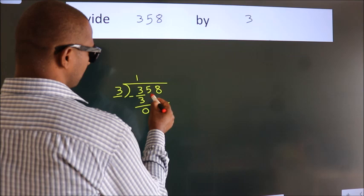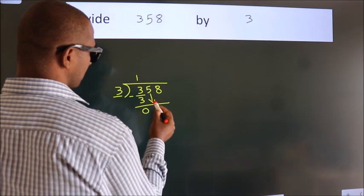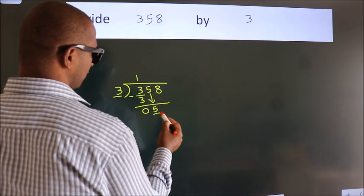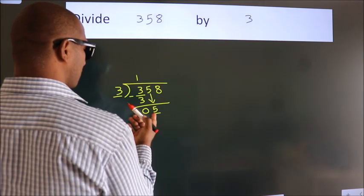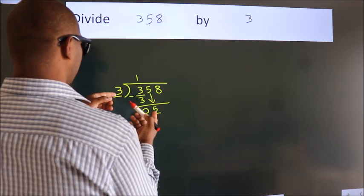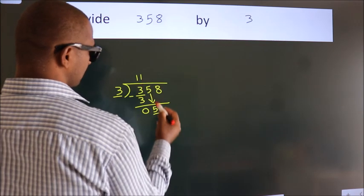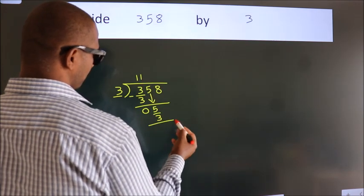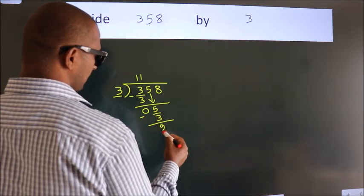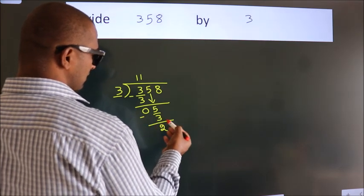After this, bring down the beside number. So 5 down. A number close to 5 in the 3 table is 3 once, 3. Now we subtract. We get 2.